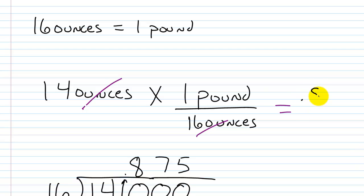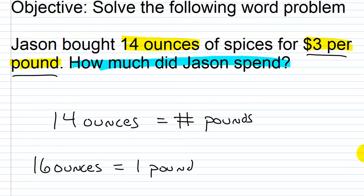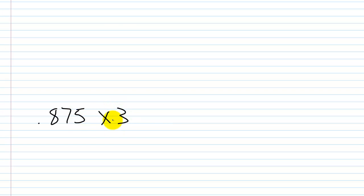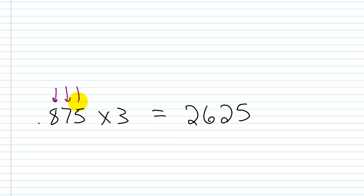So 14 ounces is 0.875 pounds. All we need to do now is multiply this by $3, because it's $3 per pound. We want 0.875 times 3. Ignore the decimal and do 875 times 3: 800 times 3 is 2,400; 70 times 3 is 210; so 2,400 plus 210 is 2,610. Then 3 times 5 is 15, so 2,610 plus 15 is 2,625. We have three decimal places between the factors, so this goes three places to the left.